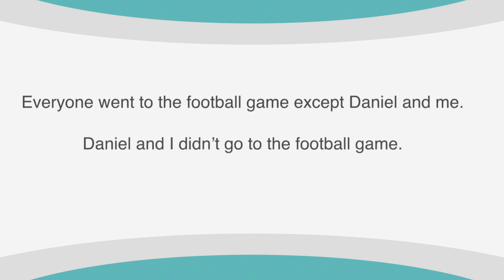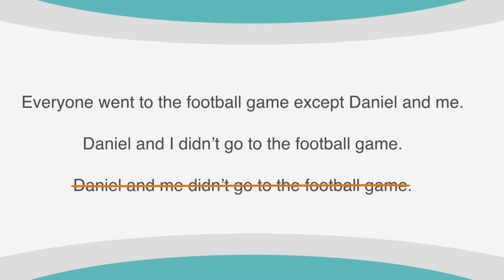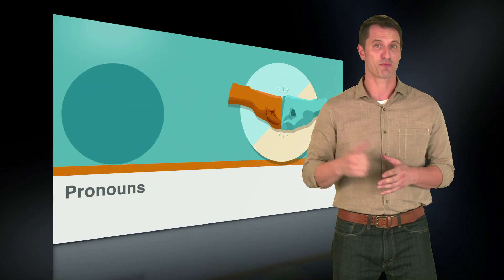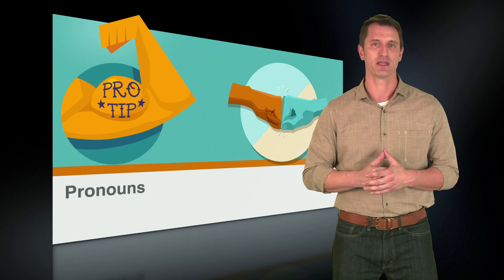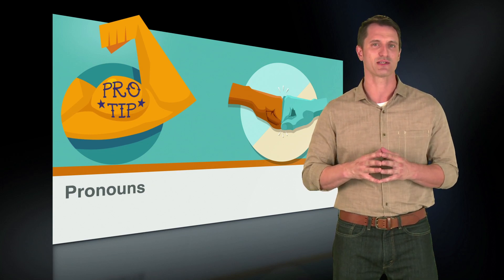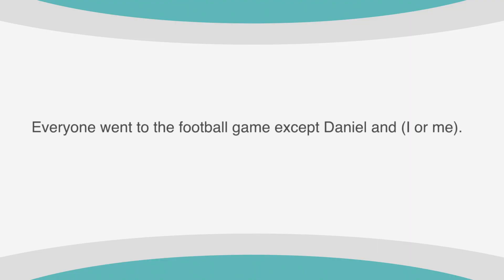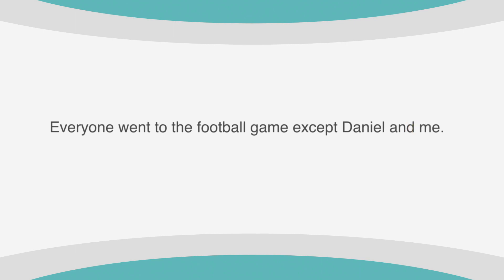If the sentence read Daniel and I didn't go to the football game, then I would be correct instead of Daniel and me. So what do you do if you can't tell whether you're working with a prepositional phrase or a sentence, and whether you need I or me? Here's a pro tip: subtracting the other person from the phrase or sentence will simplify the choice for you. Everyone went to the football game except Daniel and I or me becomes everyone went to the football game except I or me. It should become apparent that I is incorrect — you wouldn't write everyone went to the football game except I. Everyone went to the football game except me is correct.